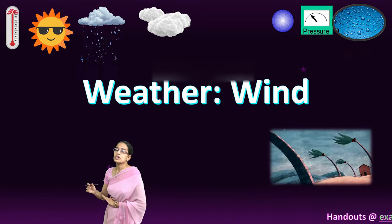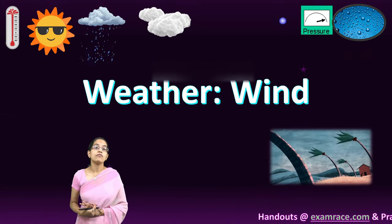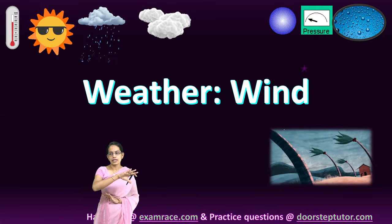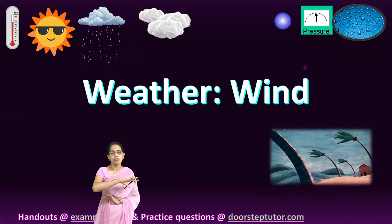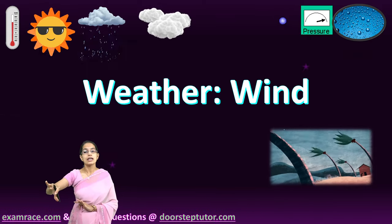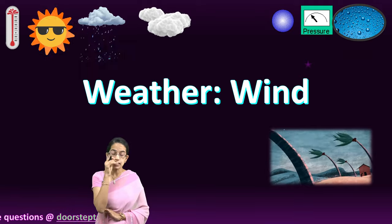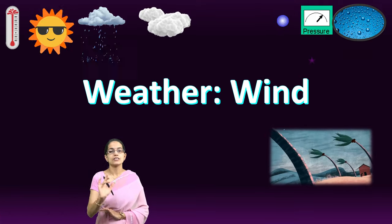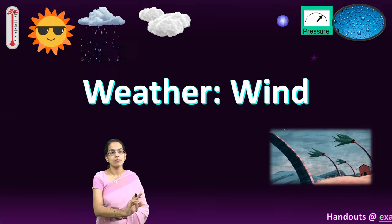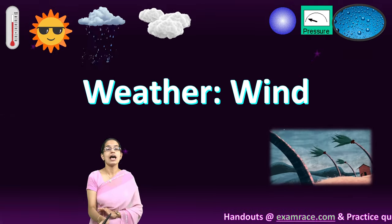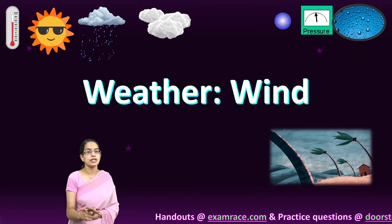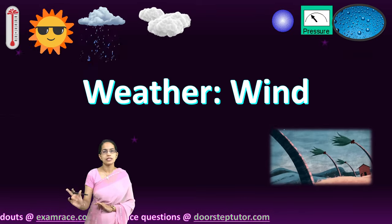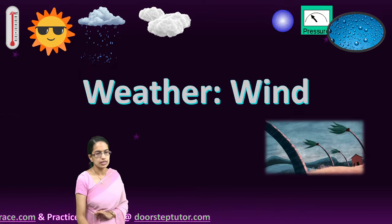The next element is wind. The direction of the wind affects temperature — winds moving from warmer areas increase temperature, while winds coming from cold areas decrease temperature. So wind has a significant impact on the temperature of a region. Wind direction and speed are both analyzed through weather instruments, which we will understand in the next section.